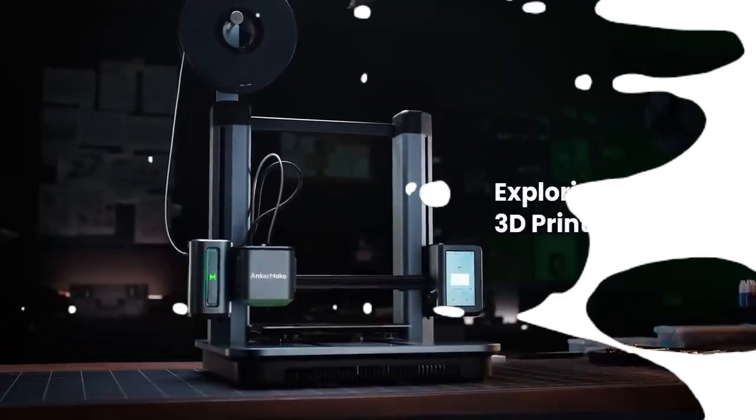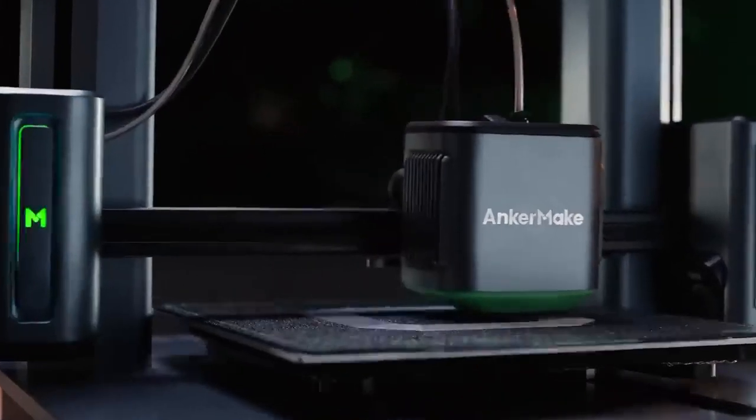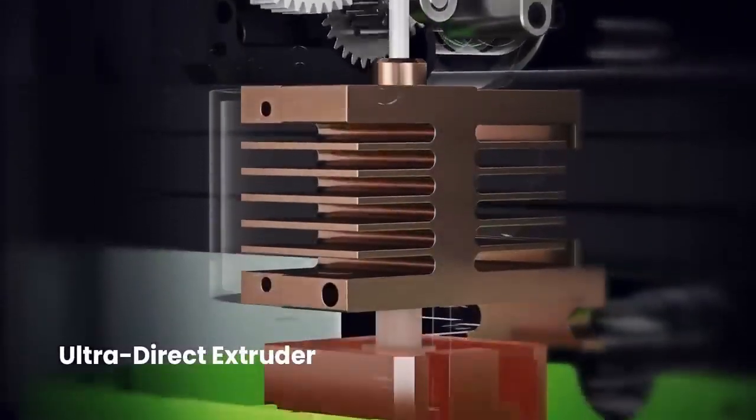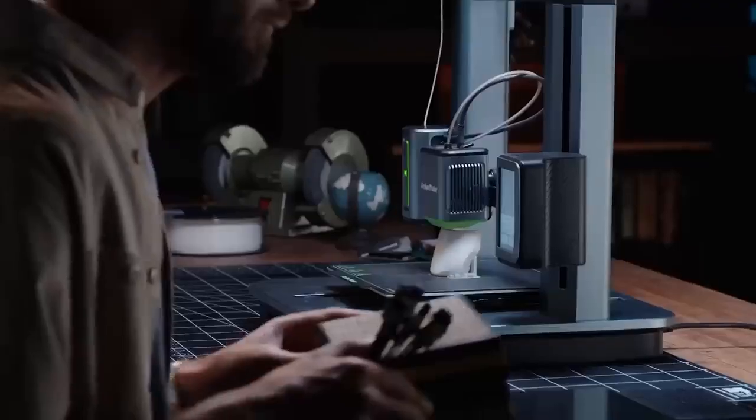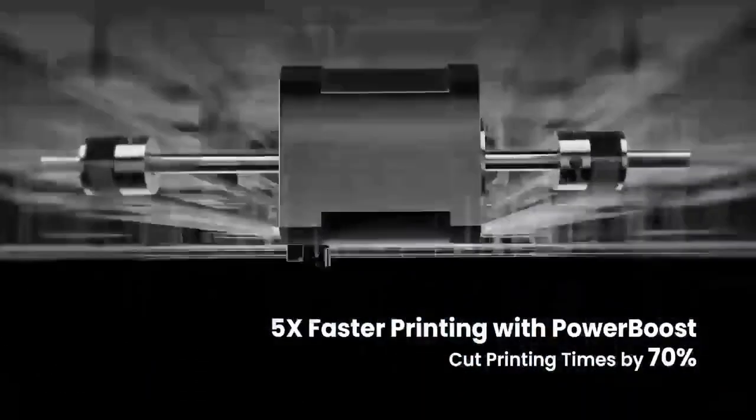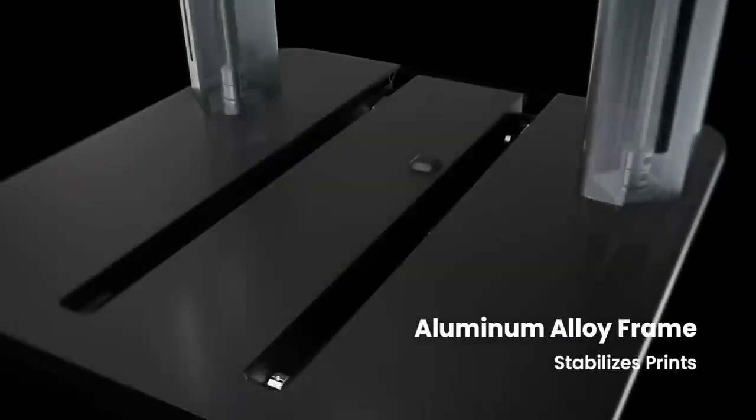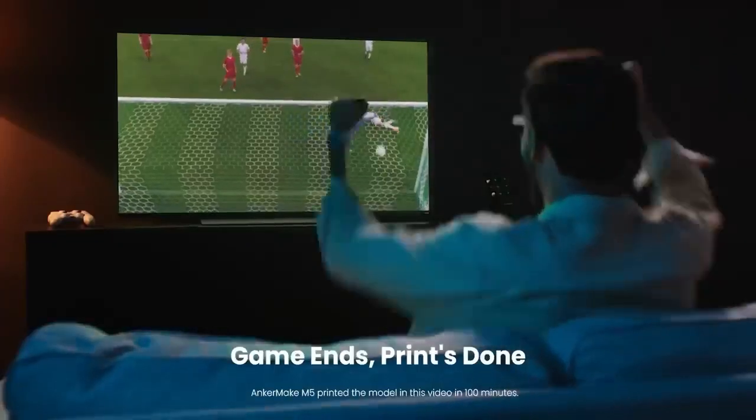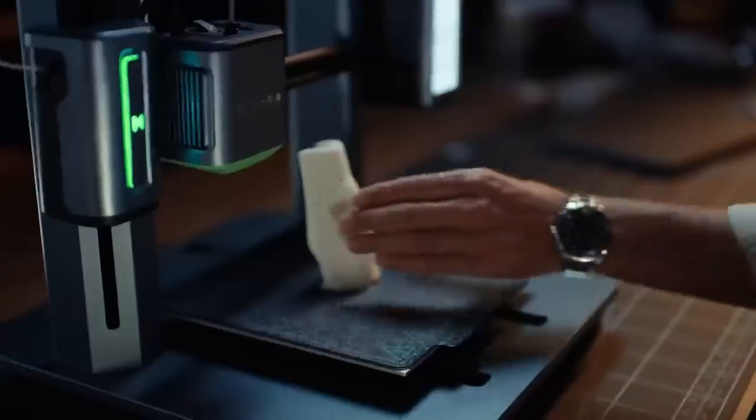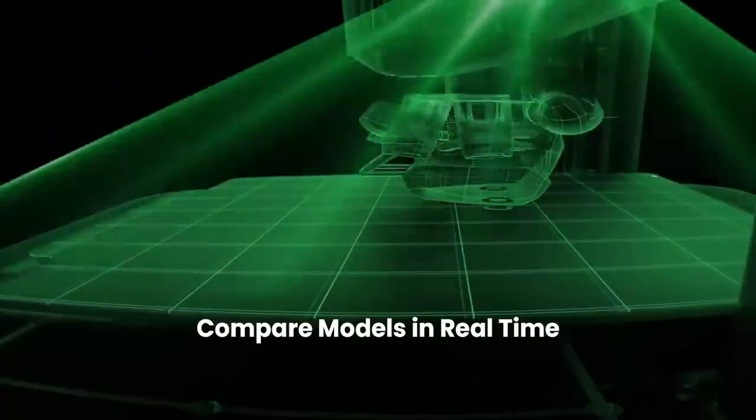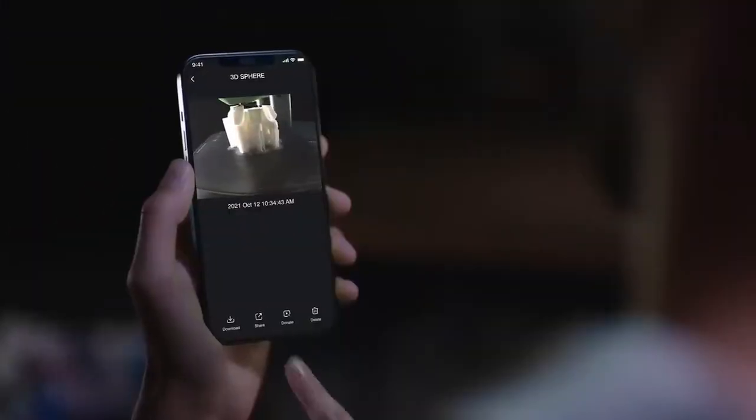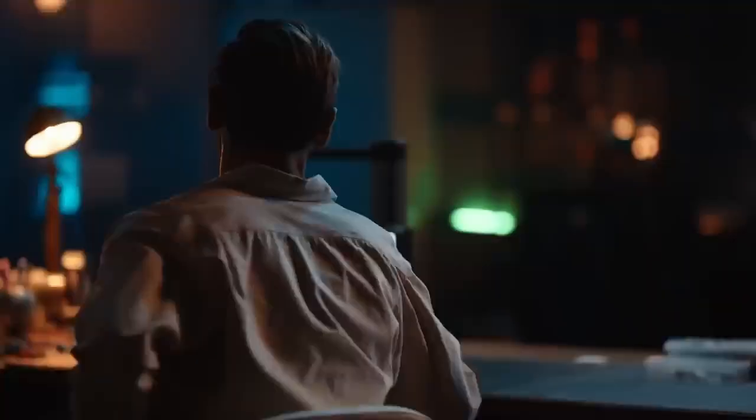Number two: Anker Make M5. Anker Make M5 3D printer: Anker is primarily known for its electronic accessories and products like chargers, cables, and portable batteries. However, they may have expanded into the 3D printing market since then. If the Anker Make M5 is a new release, it's likely to be a 3D printer designed for consumer or hobbyist use. It may offer features such as ease of use, reliable printing performance, and possibly some unique features that differentiate it from other models on the market. To learn more about the Anker Make M5, you could check Anker's official website or reach out to them directly for information. Additionally, looking for reviews or discussions in 3D printing communities could provide insights from users who have experience with the printer.